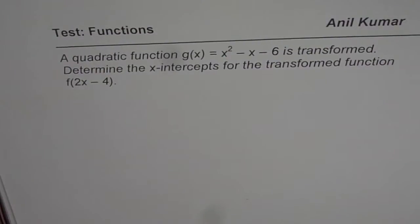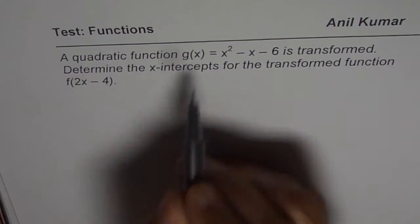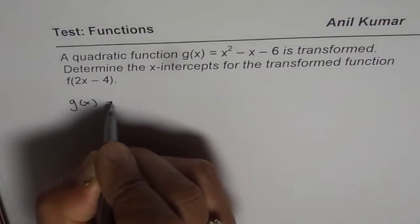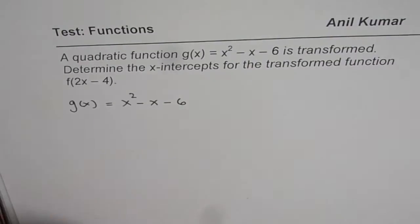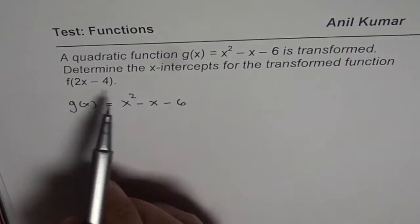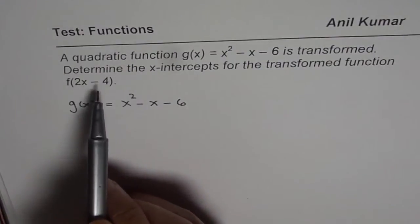I am Anil Kumar and here is a very interesting question on functions involving transformations. A quadratic function g(x) = x² - x - 6 is transformed. Determine the x-intercepts for the transformed function f(2x - 4). We are given g(x) = x² - x - 6, and we need to find the x-intercepts of f(2x - 4).